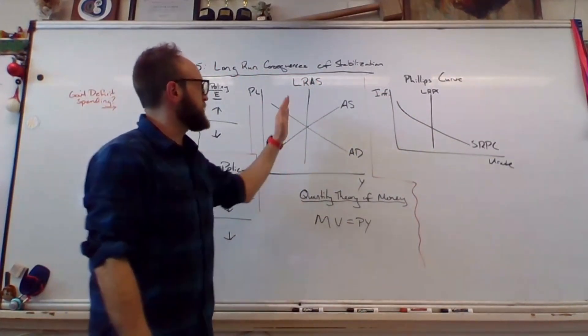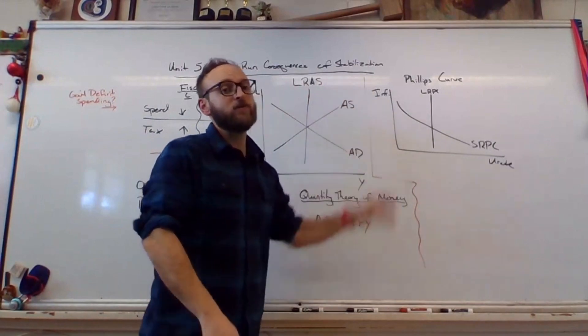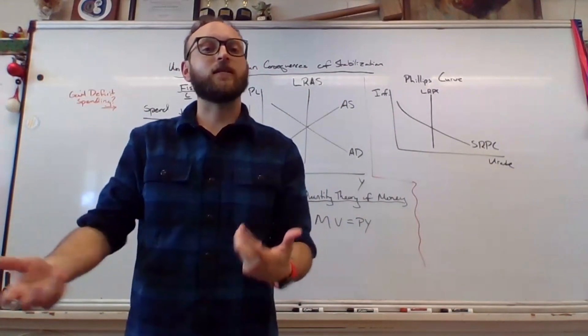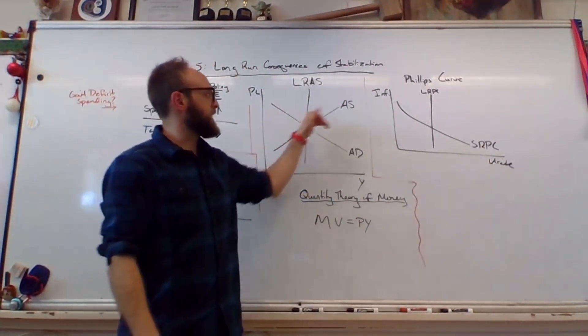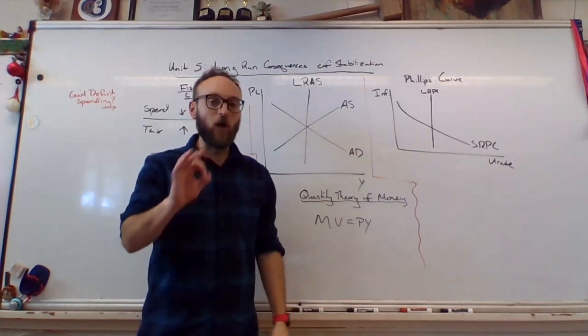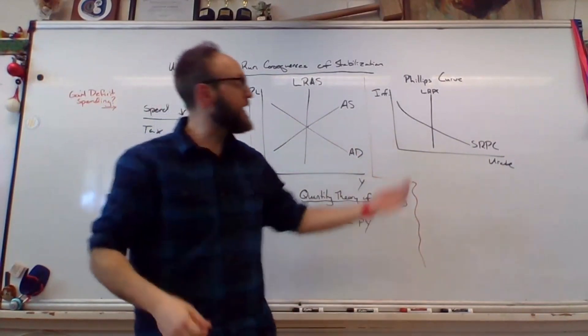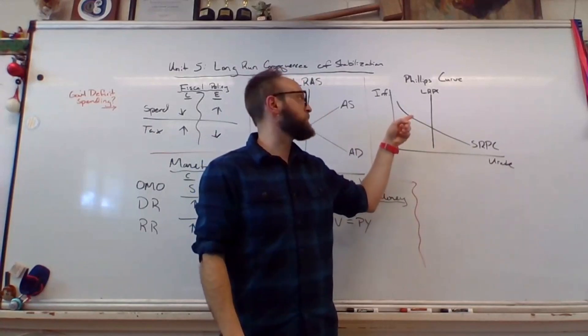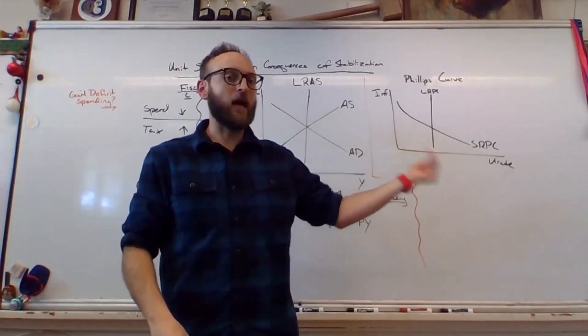One thing to watch out for is if the entire LRAS line moves, you have a major infrastructural change or human capital change—free college to the United States—thus causing both demand and supply to shift right, permanent growth, you would see the long run Phillips curve shift left in that scenario. Because if the long run aggregate supply line moves, so too does the long run Phillips curve, but they're opposite.